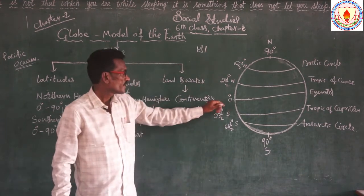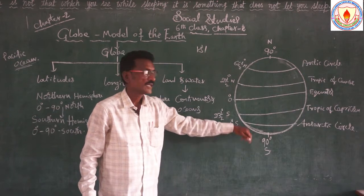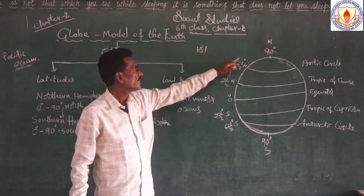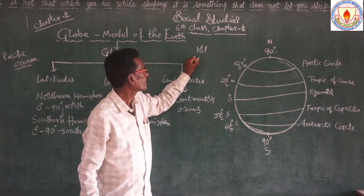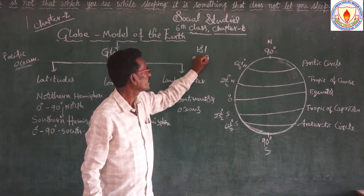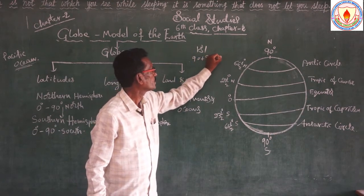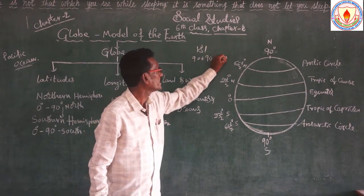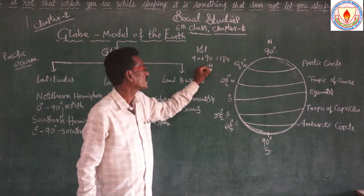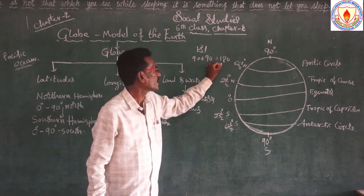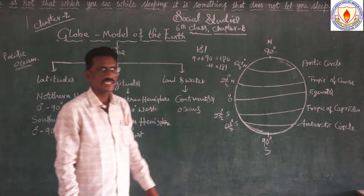From the south side: 90, plus from the north side: 90 — that equals 180. Plus one equator. The total is 181 latitudes.